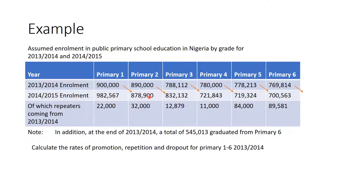So only those people moved down. To get the actual number that moved, because out of 890,000 there are 32 repeating, you always subtract the repeaters from the enrollment to get the actual number that were promoted. This will not give you the actual total of promotion otherwise. As noted, in 2013-2014, after primary 6, only 545,013 graduated from primary 6. You are asked to calculate the rate of promotion, repetition, and dropout for primary 1 to 6 for 2013-2014.